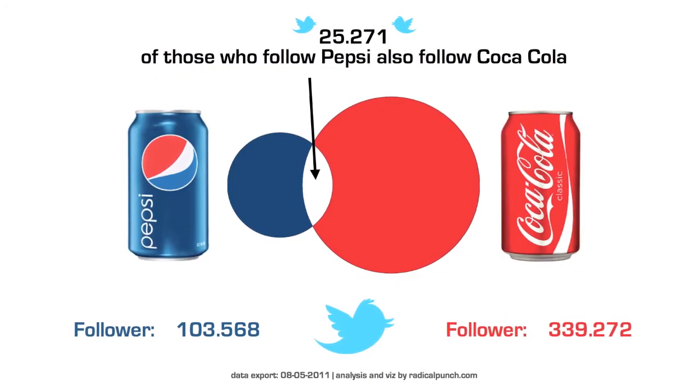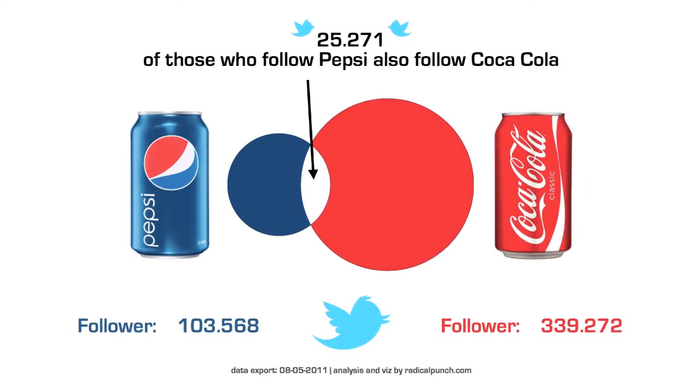Inspired by this visualization, we decided to create our own. We took the Twitter accounts from Pepsi and Coca-Cola and decided to compare them. What we found out was shocking — 25,271 of those who follow Pepsi also follow Coca-Cola. What does that mean? It's either Pepsi or Coke — why would people want to follow both accounts?